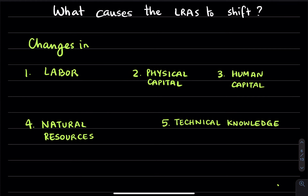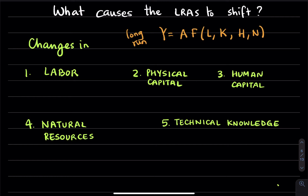We've seen the production function before, which says that real GDP in the long run is a function of labor (L), physical capital (K), human capital (H), and natural resources (N), with a multiplier effect from technical knowledge or technology (A). Any changes to those factors would move the long-run aggregate supply curve.